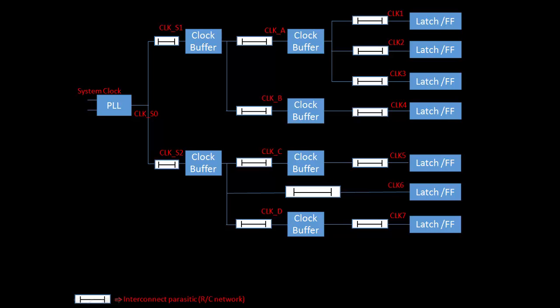These are the clock buffers, and then again there is a chain of buffers and interconnects, finally connected with the different latches or flip-flops. It can be latches or flip-flops depending on your design — whether it's purely flip-flop based or a combination of latches. At the input of the flip-flops, these are CLK1, CLK2, CLK3 — the different destination clocks.